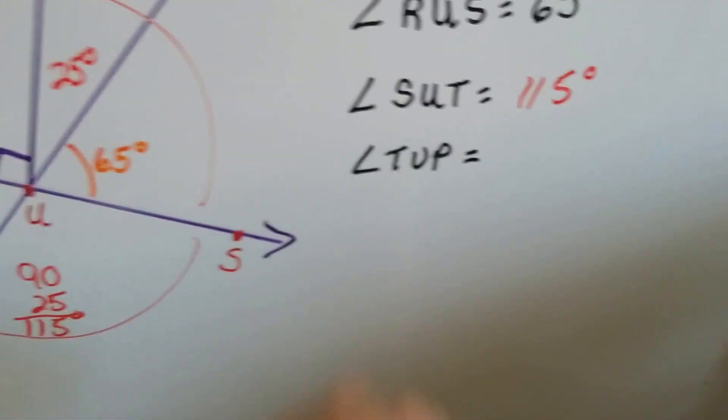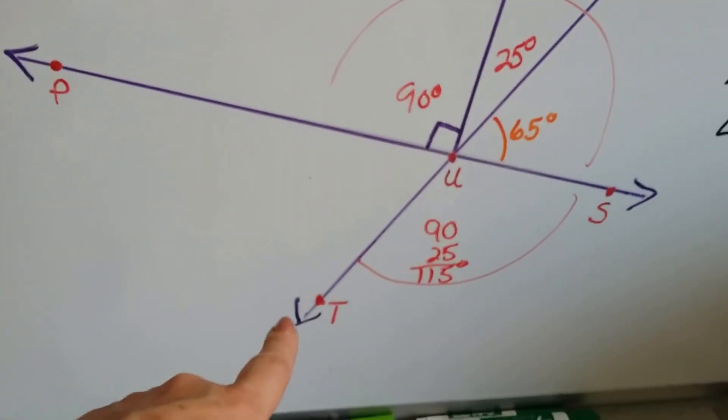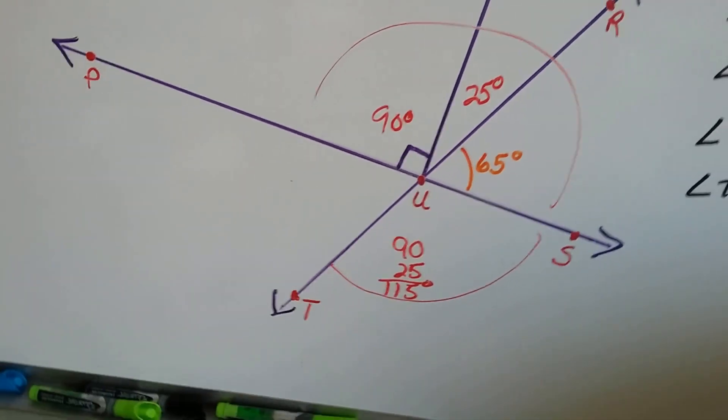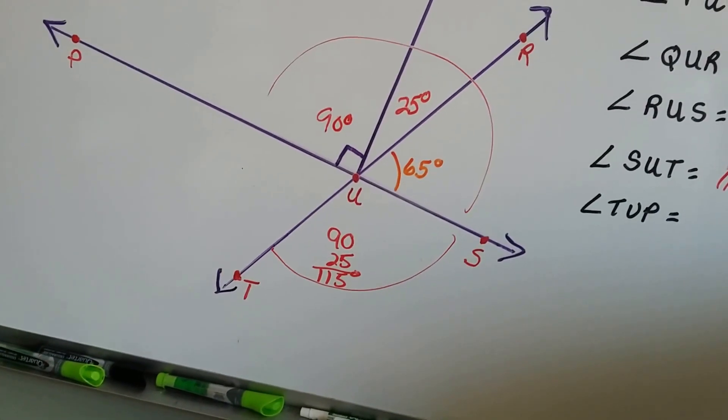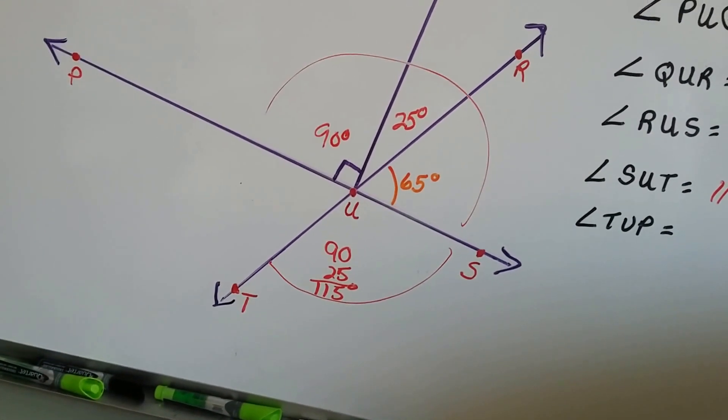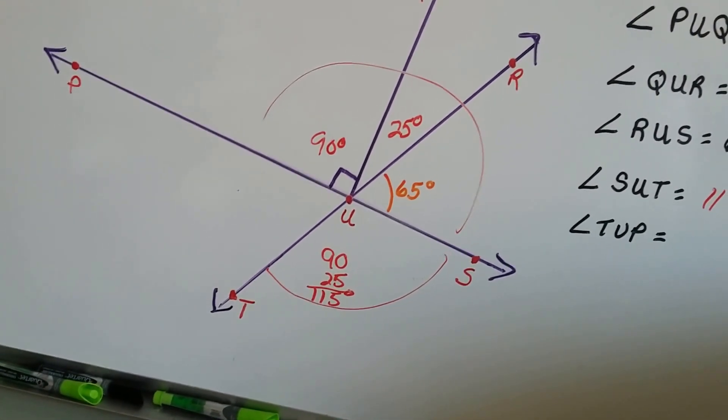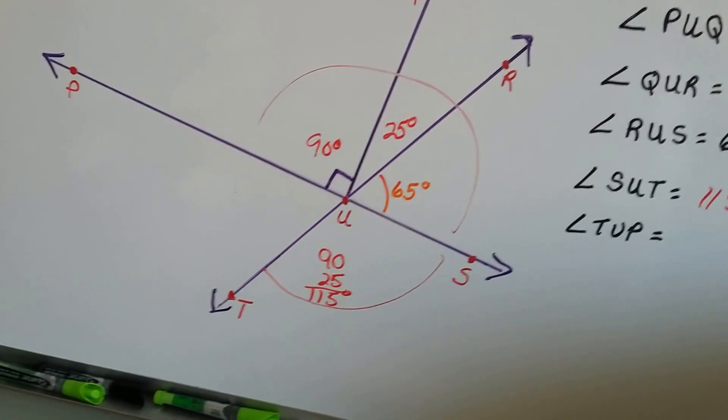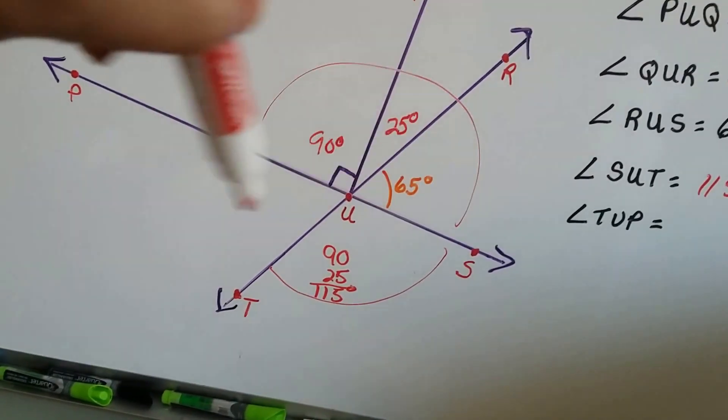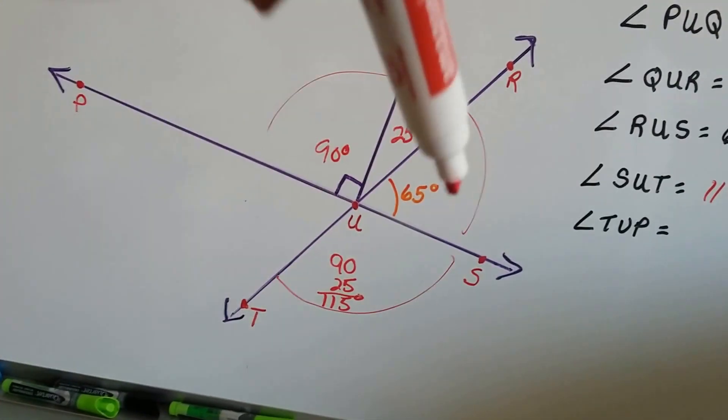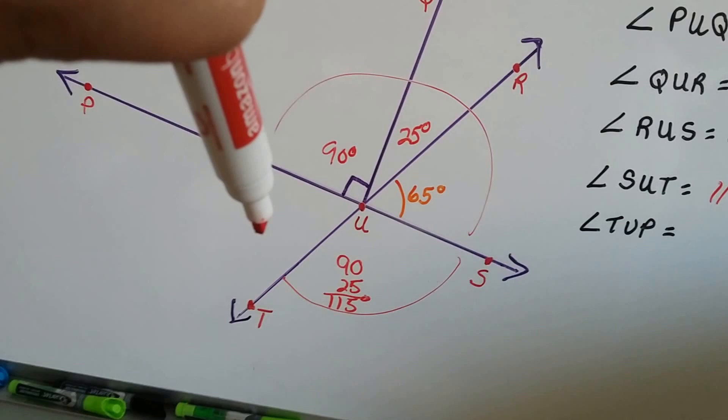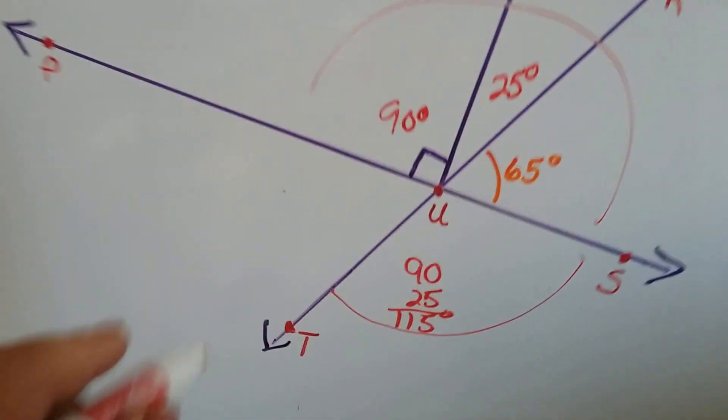So now we have T, U, P is left. T, U, P is the last angle that's left. Do you see any complementary, supplementary, vertical, or adjacent angles that will help us figure out what that one would equal? Well, look at it. It's a vertical angle to R, U, S. They're directly across from each other. So if that's 65 degrees, that's its opposite. It would have to be 65 degrees also.